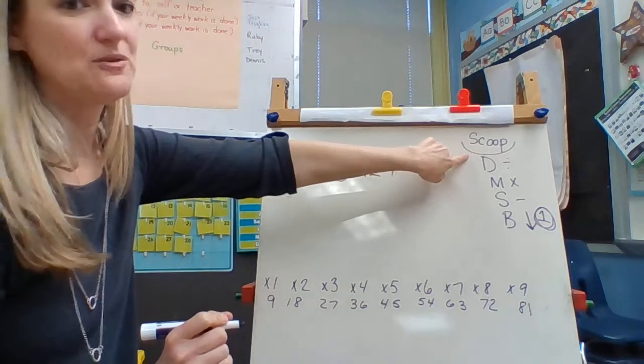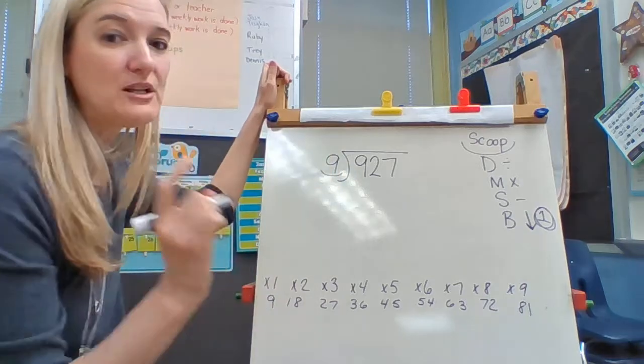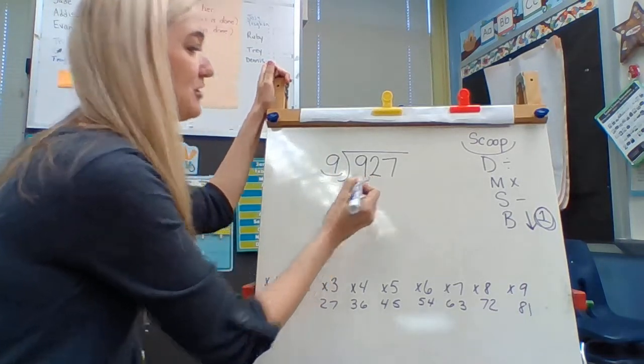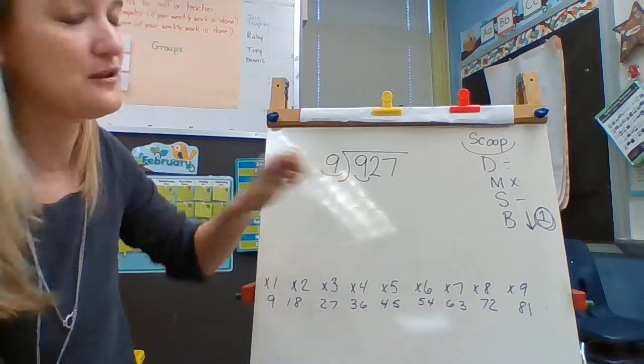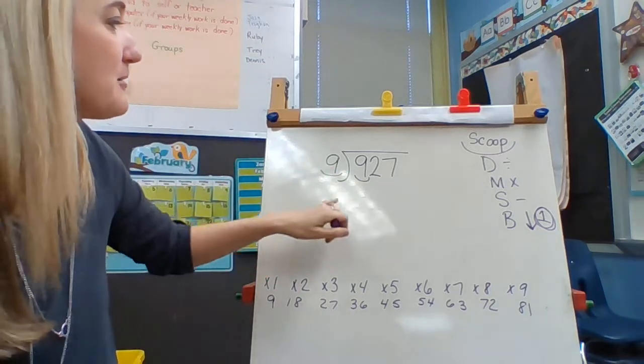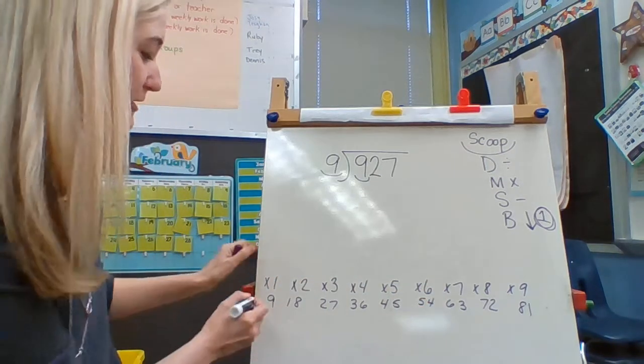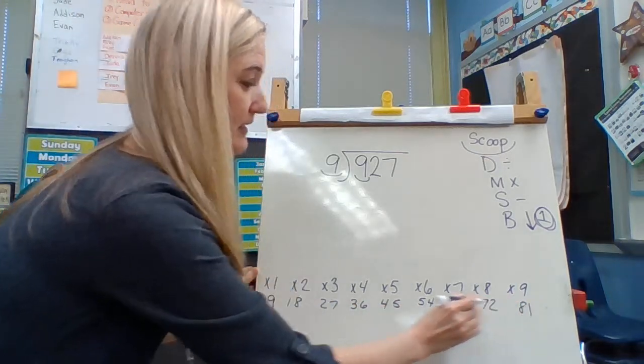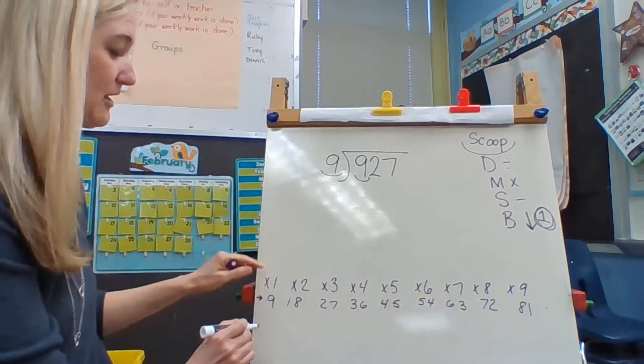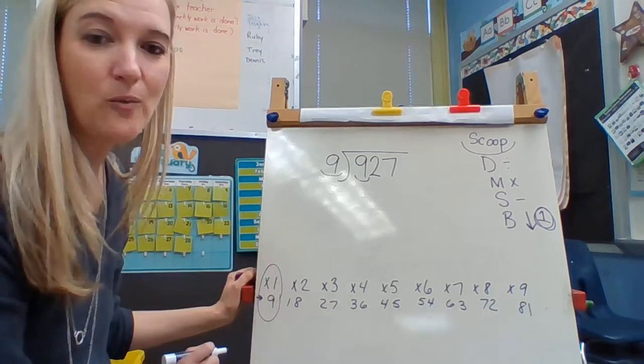So the first thing I want to do is I want to scoop. I have one digit here, so I want to try to scoop my first digit just to see if I can divide my divisor into the first digit of this bigger number. So how many times can 9 go into 9 without going over 9? I have to look down here on this bottom line, my skip counting line. So if I look down here, how many times can 9 go into 9 without going over? Well, right there, one time.